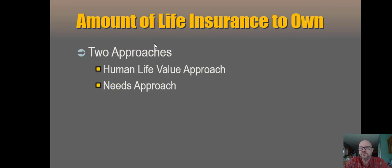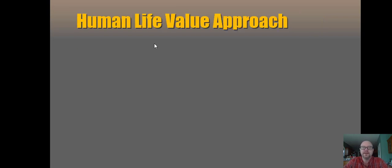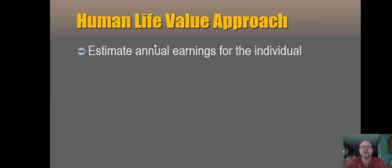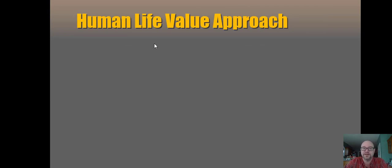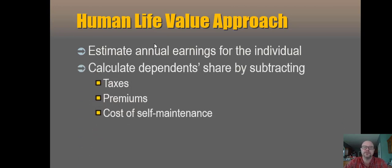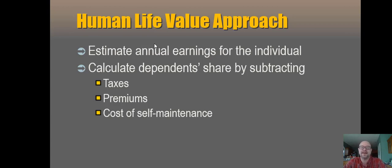There are a couple of different ways to approach how much life insurance you should buy. We've got the human life value approach and the needs approach. The human life value approach starts with a time value of money estimation — we calculate the present value of your future earnings. What are your current earnings? Then we figure out how much of that is actually going to support your family. Taxes are going to change if you lose your income. If you die, you no longer pay life insurance premiums, so we can subtract that from expenses. And then the big one is the cost of self-maintenance.